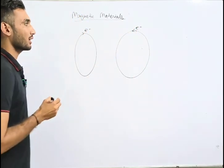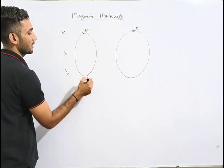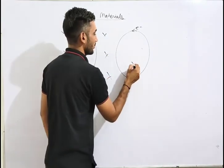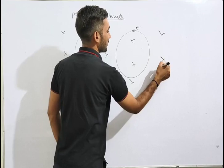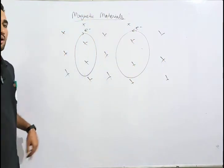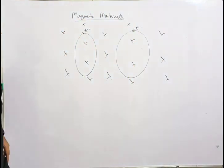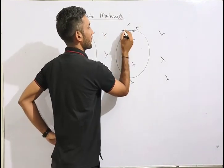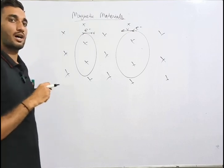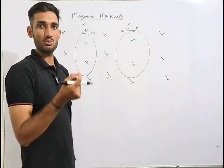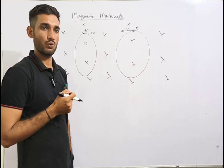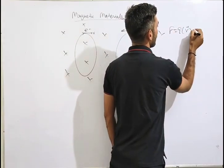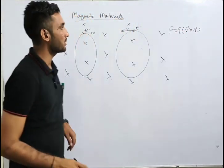Now if we apply an external magnetic field — say, directed into the board — this electron has velocity V. If a charge moves with velocity V in a magnetic field, the force applied is F = Q(V × B). Using this, the direction of the magnetic force on the electron can be determined.